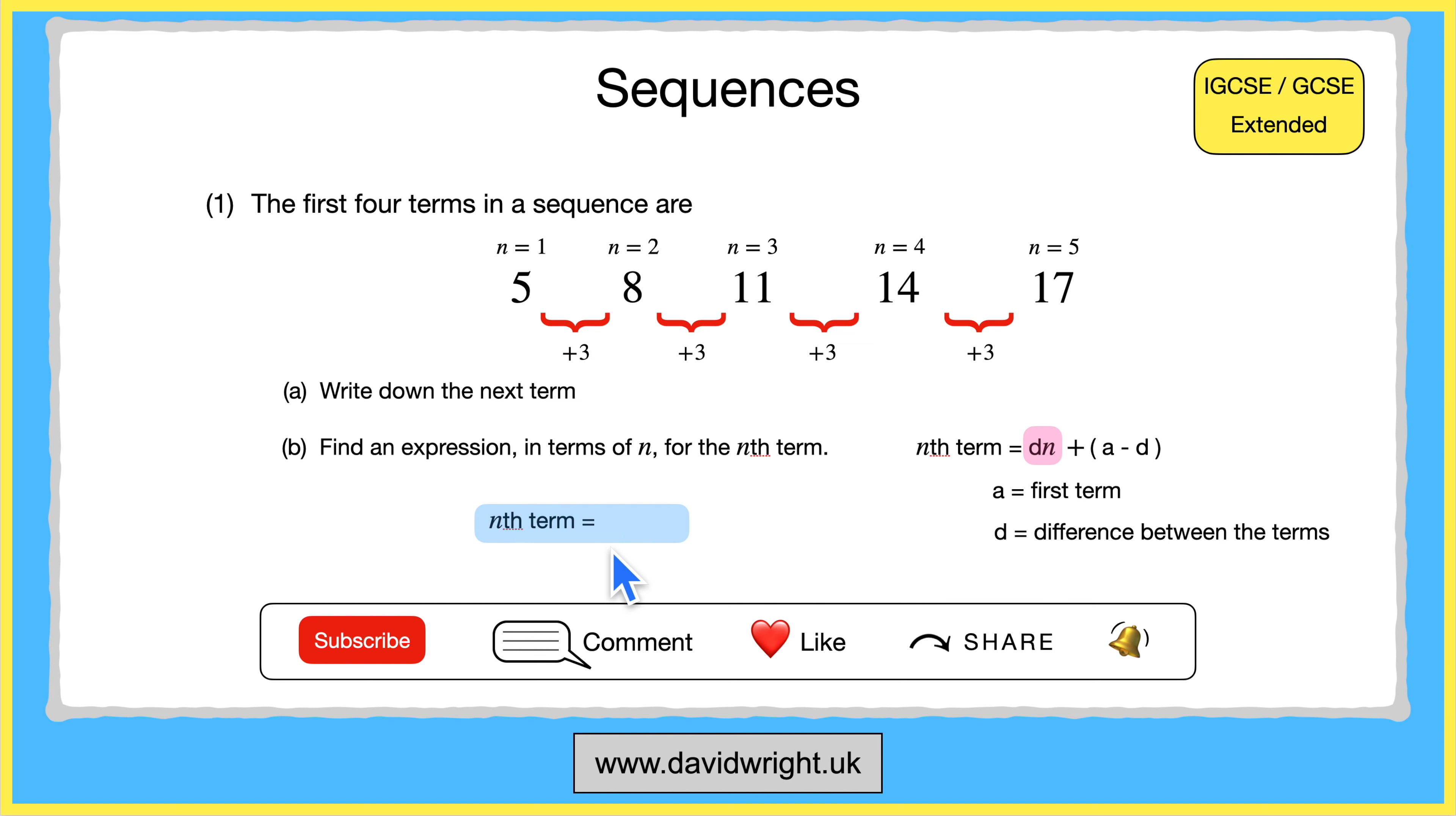We firstly find dn which is the difference between the terms multiplied by n. So we can write 3n because we know that d equals 3. Next we need to find a minus d. Well a equals 5 because it is the first term in the sequence. Minus 3 the difference between each term which gives us 2.